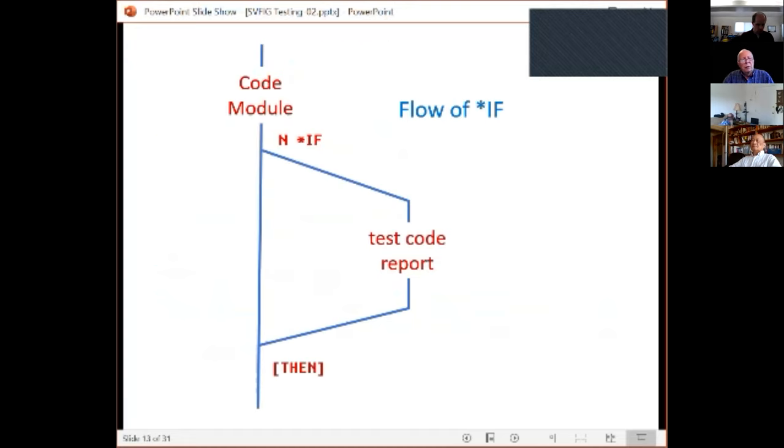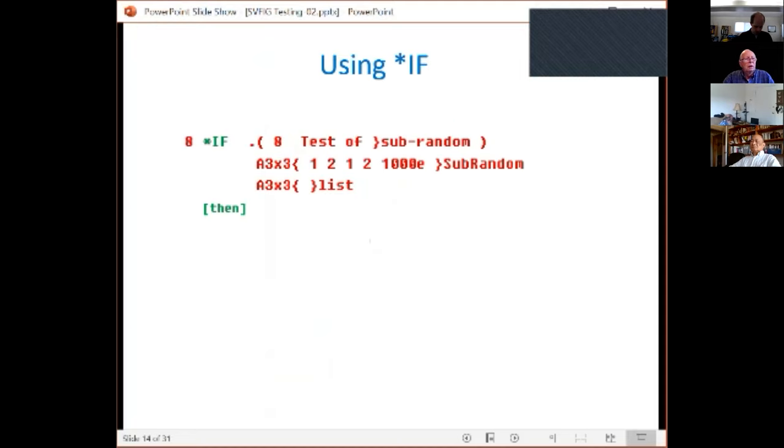Here's a flowchart of what the code looks like. At the top left, you input your code that you're testing, then you give it a test number n and execute star-if. If you're within the desired test limit range, it will execute the test code, give your report, and then continue. If the test number doesn't activate the if part, it skips directly to the end. So the test will either execute or not.